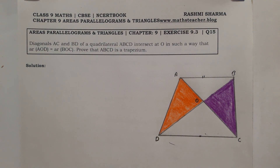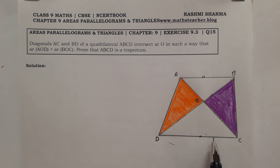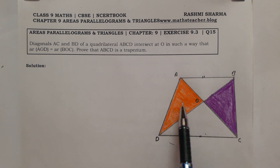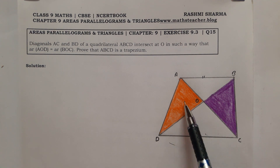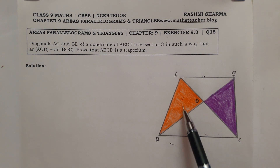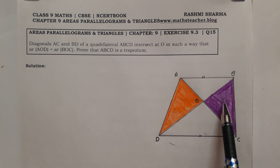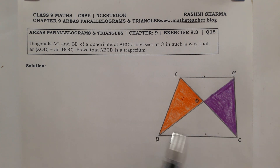We will use the theorem: if two triangles are on the same base and have equal areas, then their altitudes are equal. Here we have two triangles whose areas are equal, so we will use this theorem.